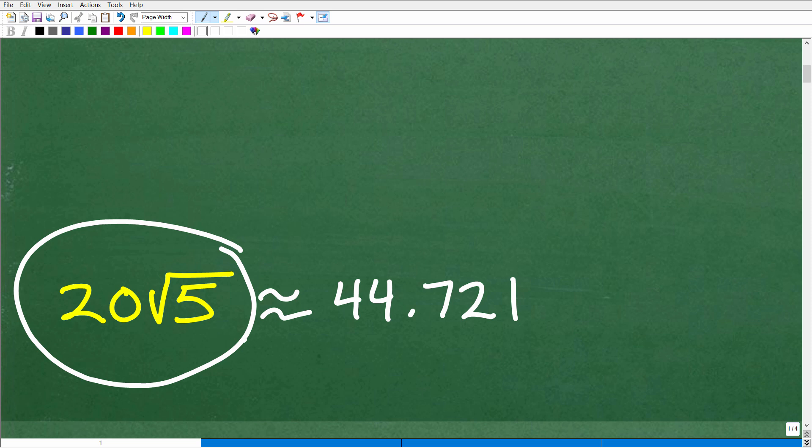Now, of course, you could get an approximation of this by taking the square root of 5 on your calculator and multiplying it by 20. So if you came up with this answer, 44.721, of course, this is an approximation as I am rounding off. This is what you would get if you used a calculator.